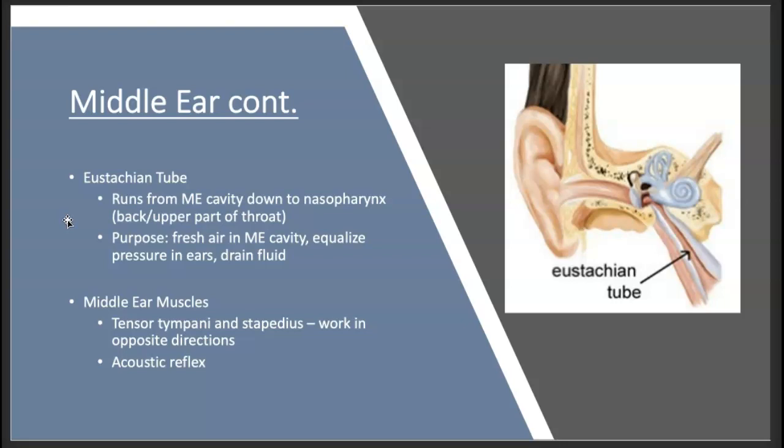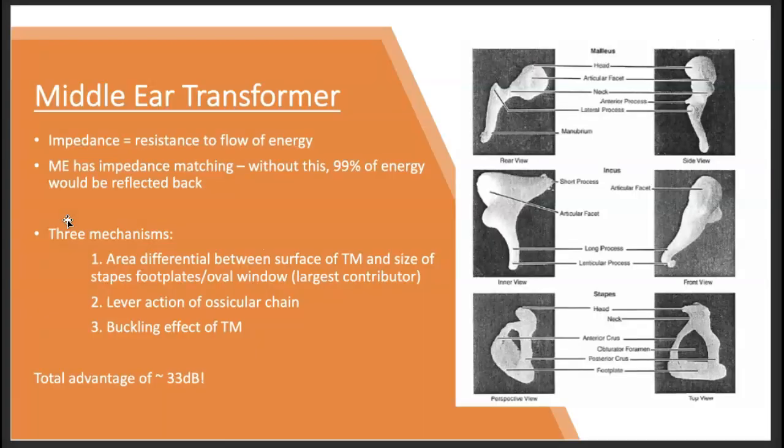Of course, the eustachian tube, sometimes it'll be referred to as the auditory tube, but it essentially allows for a consistent air pressure in the middle ear space. So many of you have probably been on an airplane or gone up in the mountain—you feel your ears start to get tight, and then you move your jaw, you open your mouth something like that, and then you feel it pop. That's the eustachian tube kind of equalizing that pressure. And again, the middle ear transformer is a very important component of the middle ear system.